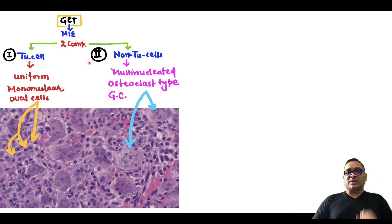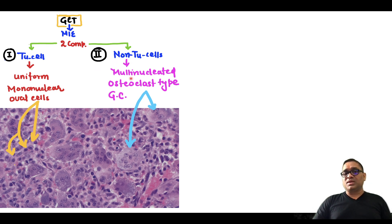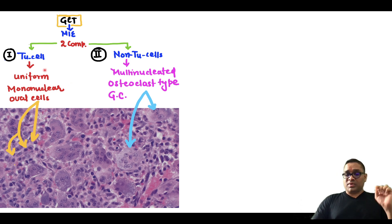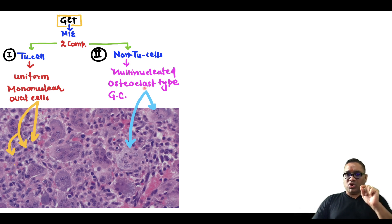Because of these tumor cells, they are going to activate the osteoclast type of giant cell. So the non-tumor cells are the multi-nucleated osteoclastic type of giant cell. Please remember: the majority of the tumor cells are the uniform mononuclear cells, while the multi-nucleated osteoclastic cells are non-tumor cells.